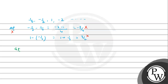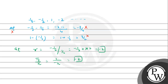Now let's check for GP. The common ratio T2 by T1 = (minus 1/2) divided by (1/4) = minus 1/2 times 4, which is minus 2. Then T3 by T2 = 1 divided by (minus 1/2) = minus 2. We can see both are equal, so yes, it is a GP.